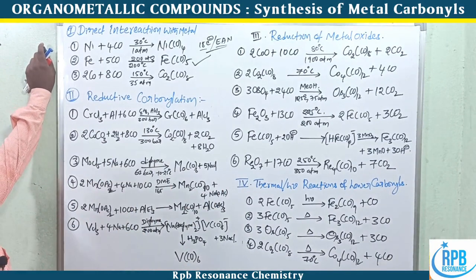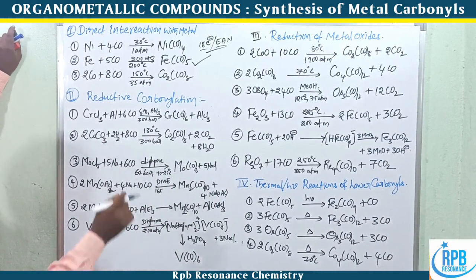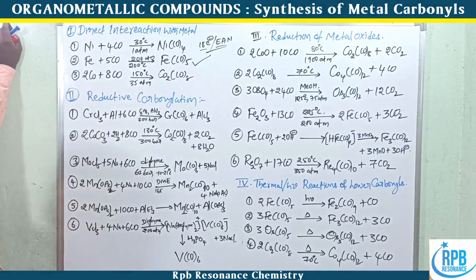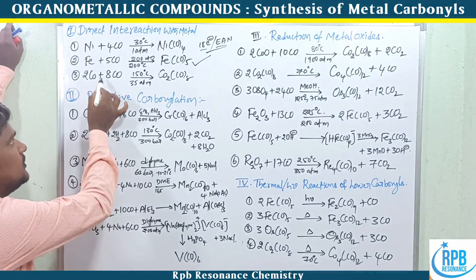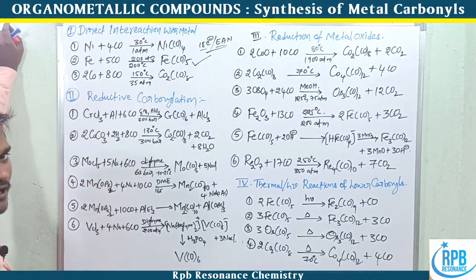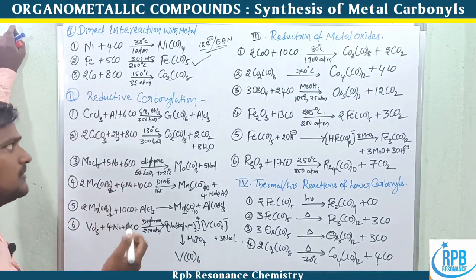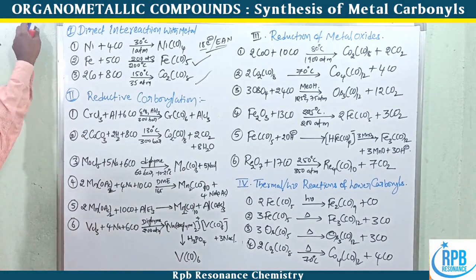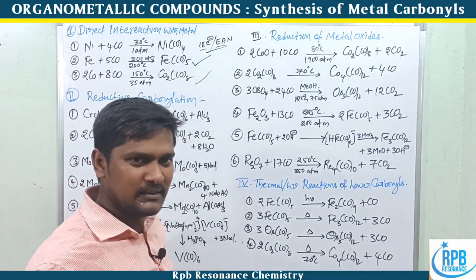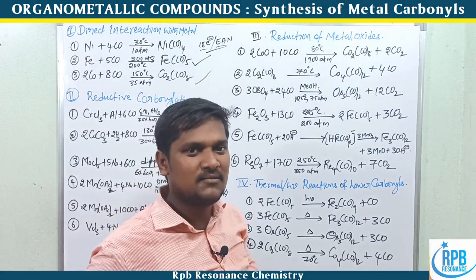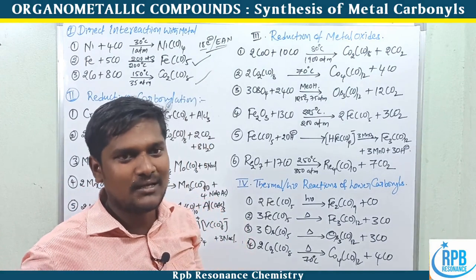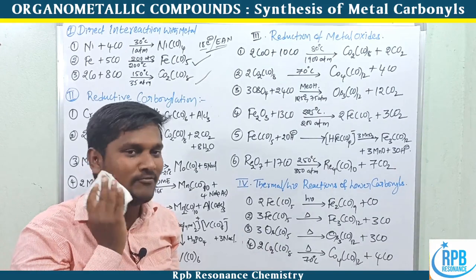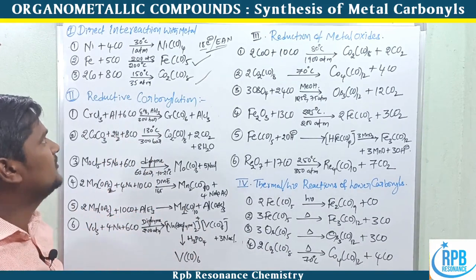Exceptionally, vanadium also falls in this category. For cobalt, dimerization occurs: two cobalt atoms with eight carbonyls form dicobalt octacarbonyl, Co2(CO)8. This is the first preparation method — direct interaction of CO with finely divided metal.